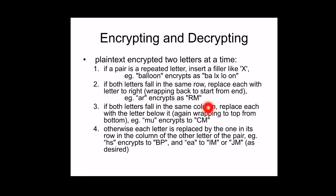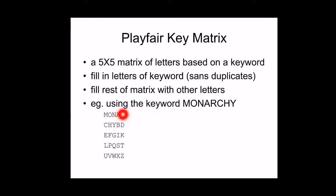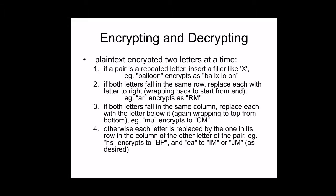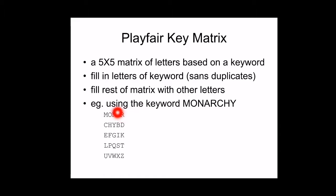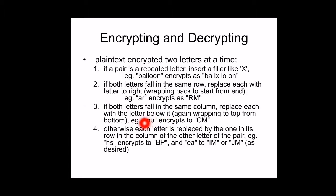Rule 3: If both letters fall in the same column, replace each with the letter directly below. For example, take plaintext M and U — both in the same column. For M, the character below is C. For U, there is no character below, so wrap to the top, which is C. So M-U is encrypted as C-M.